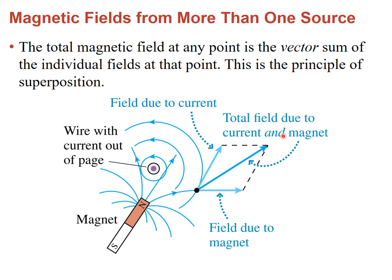If you have two sources of fields, the magnetic fields that they produce will add up vectorially. For instance, here we have a wire perpendicular to the screen with the current coming out of the page, so using the right hand you can see it produces a magnetic field that circles around counterclockwise. At the same time, we have a magnet with north and south poles producing a field that comes out from the north and goes into the south. At a given point, the net field is the vector sum of both contributions.